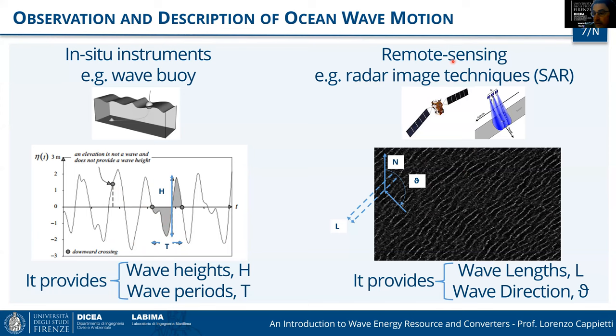Looking at the sea state from space — for instance from a satellite using synthetic aperture radar — we can obtain maps or pictures of the sea state. In a radar image you can easily recognize specific paths: white lines that are the crests and the darker parts that are the troughs.